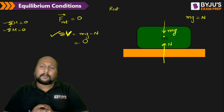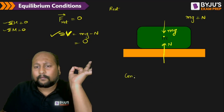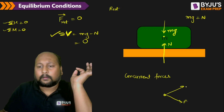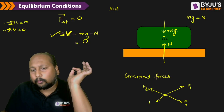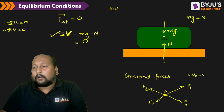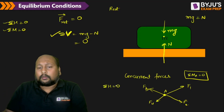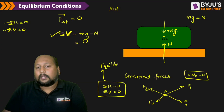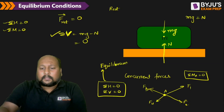If a body has concurrent forces — meaning forces that converge at or diverge from the same point — then if I calculate the moment about point A, it will always be equal to zero for all forces F1, F2, F3, and F4. In that case, if only the two conditions — total horizontal force and total vertical force equal to zero — are satisfied, we can say the body is in equilibrium.